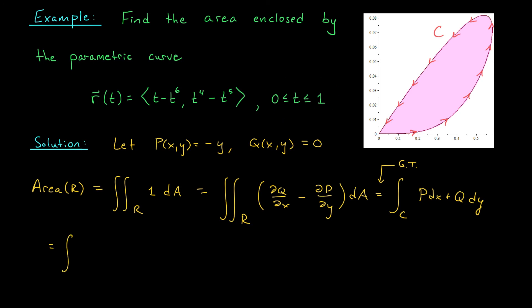that's ⟨1 - 6t⁵, 4t³ - 5t⁴⟩, dt. At this point, we can replace our y term with t⁴ - t⁵, expand our dot product, and solve. We'll get the integral from 0 to 1 of (t⁵ - t⁴) times (1 - 6t⁵), and our Q term here kills off the other term in the derivative of r(t). So at this point, it's just a matter of solving the integral,